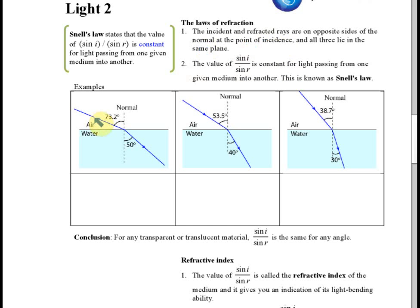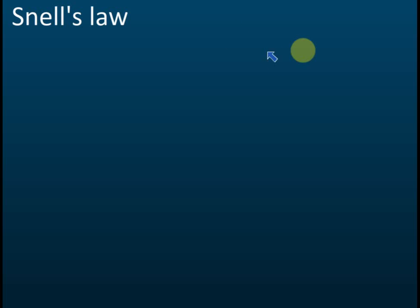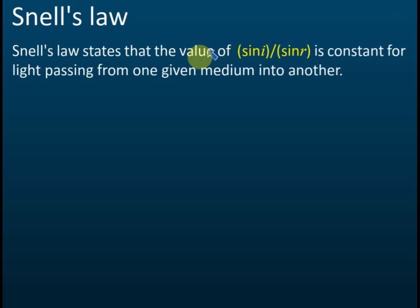To summarize: the first law says the incident ray, refracted ray, and normal lie on the same plane. The second law — Snell's law — states that sine i over sine r equals a constant for light passing from one given medium to another.